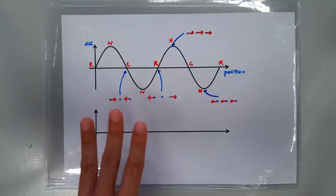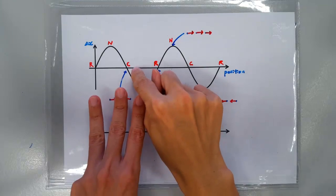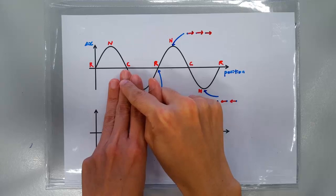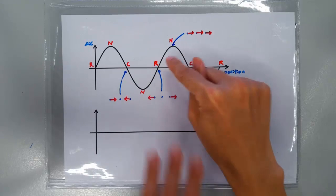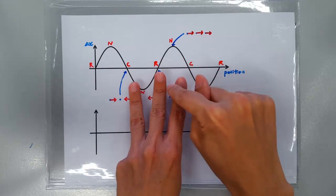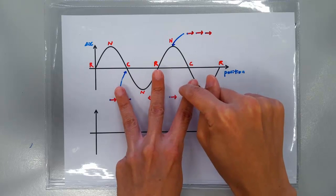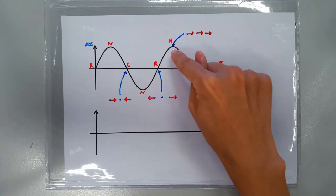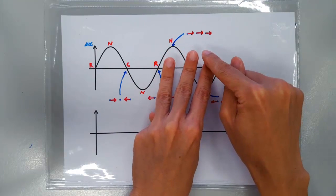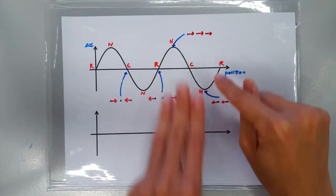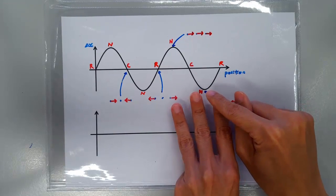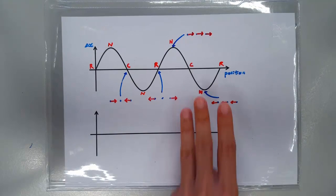So basically we have compression here because this guy stays put and his neighbors come in to squeeze him. We have rarefaction here because this guy stays put and his neighbors go further apart. And we have normal pressure here because everybody is displaced to the right, so it's the normal spacing. Same here, everybody is displaced to the left, resulting in normal pressure.